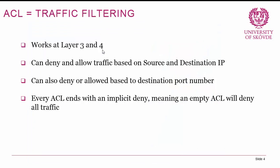ACLs are traffic filters that can filter traffic based on layer three and four — on source and destination IP addresses, on destination port numbers, and on what protocol is used, like TCP, UDP, ICMP, and so on.